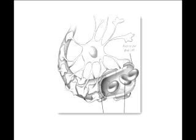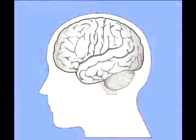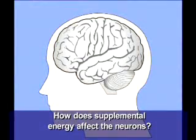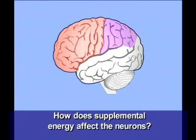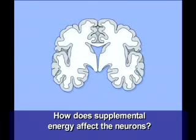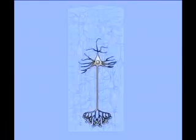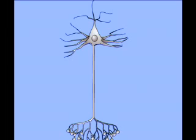It consumes 18% of oxygen and 120g of glucose. Nutrients reach the brain through the blood-brain barrier. Physical activity improves the metabolism of neurons, enhances the levels of neurotrophins, increases the number of neurons, and raises levels of neurotransmitters. This increases synaptic plasticity between neurons, especially in the hippocampus, so that learning and memory function will improve.